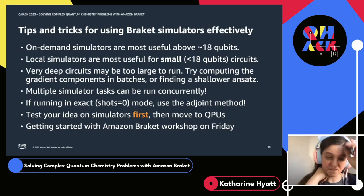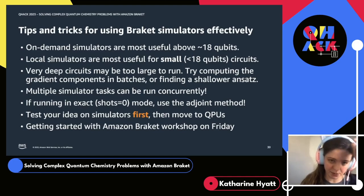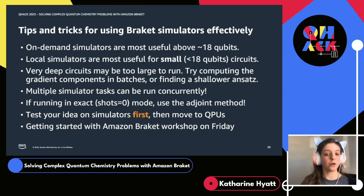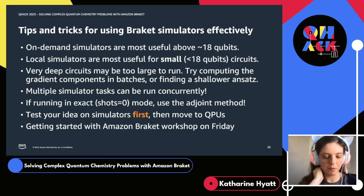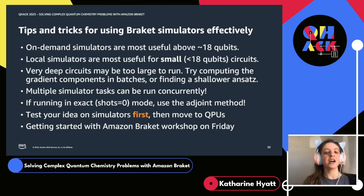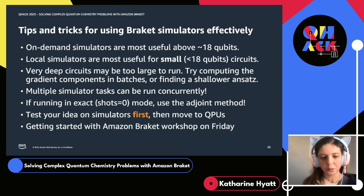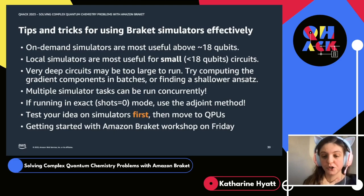Another caveat is that very deep circuits — something with 60,000 moments in it — may be too large to run. If you run into this problem, there are ways around it: you could try computing the partial derivatives in batches or try finding a shallower ansatz. There's lots of development in the realm of finding QPU-feasible VQE ansatz. Remember that you can run multiple simulator tasks concurrently — this can dramatically shorten the time it takes to arrive at a point where you're able to run something on a QPU. Please don't forget that you and your team can run multiple tasks on the simulators concurrently, and although the default concurrency limit is 35, that can be increased to 100 if needed.